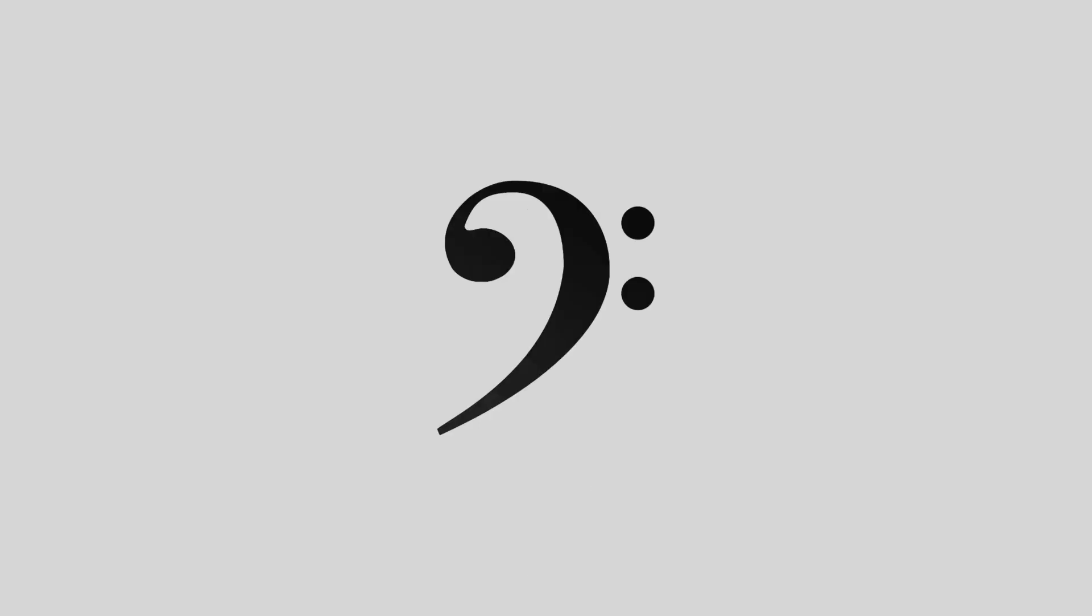In order to define pitch on the staff, we use clefs. The main clef that you'll see throughout the semester is the treble clef. The circle towards the bottom half of the treble clef will encircle the line that we'll define as G. The next one is the bass clef. The pitches on the bass clef sound lower than those on the treble clef, and the two dots on the bass clef will go around the line that will be defined as F.